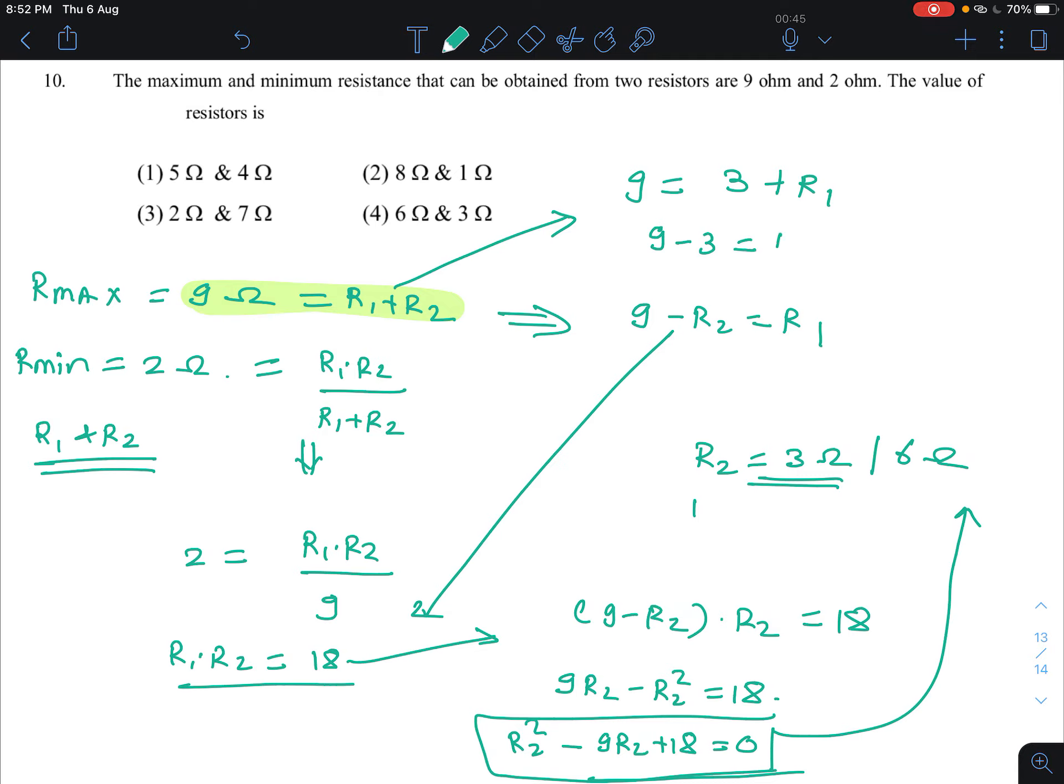So 9 minus 3 will become R1. R1 is equal to 6 ohm.